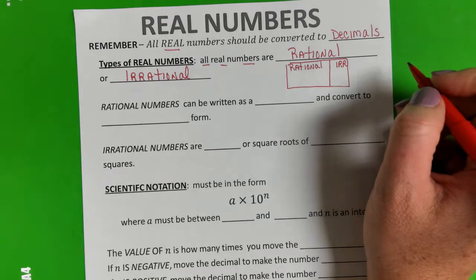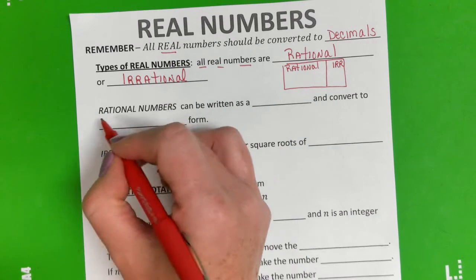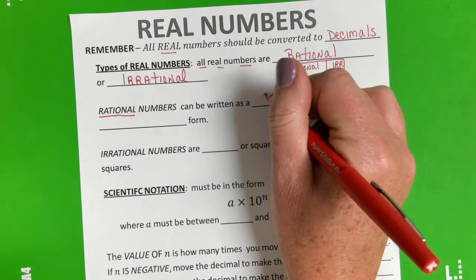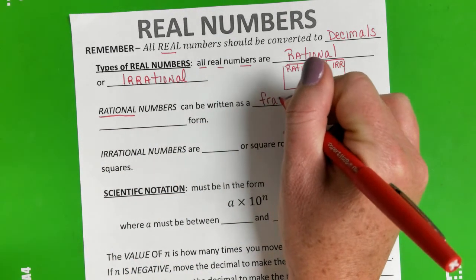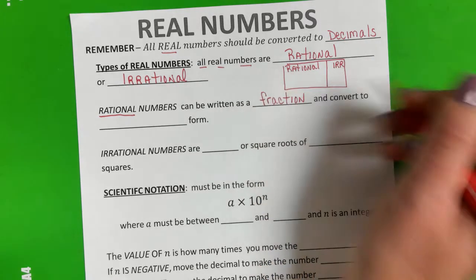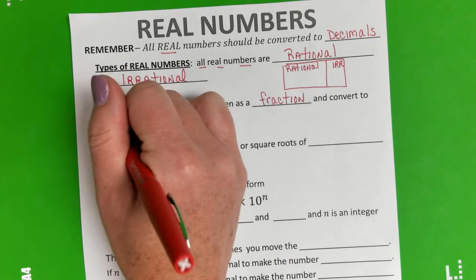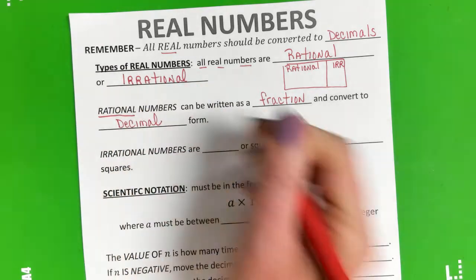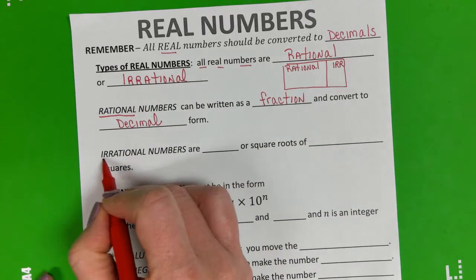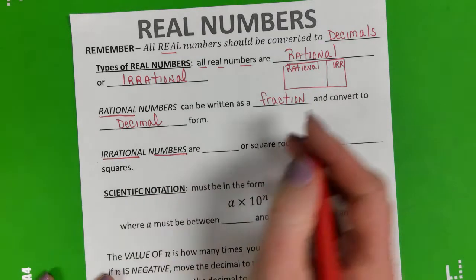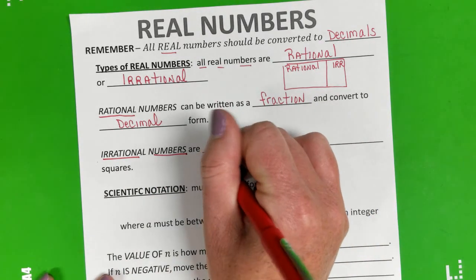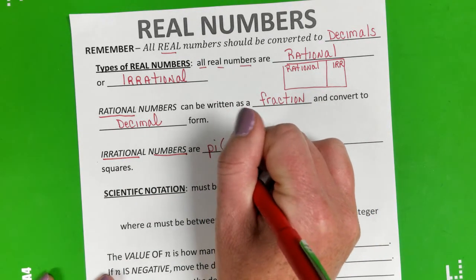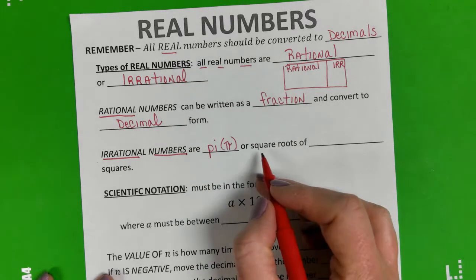Remember rational numbers can be written as a fraction and converted to decimal form if we're using it.